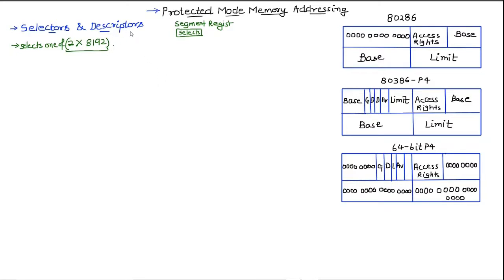We are going to briefly discuss what exactly a descriptor is. You can see we have three structures here for different microprocessors: one for the 80286, one for 80386 through Pentium 4, and one for 64-bit Core 2 and Pentium 4 processors. We are going to discuss the descriptors in each of these cases, because with advancement in processors there is also an advancement in the descriptor.